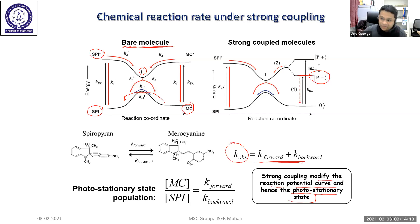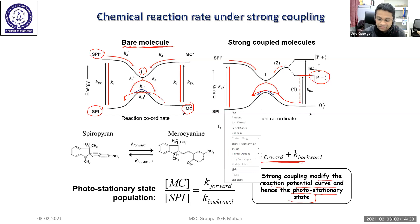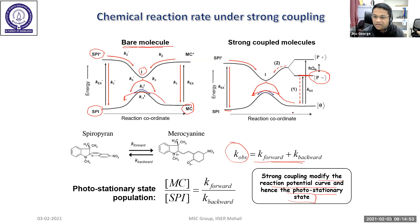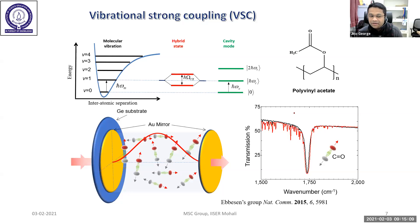One interesting aspect of this 2012 paper is the thermal return pathway — merocyanine can revert to spiropyran. Under strong coupling, the ground state energy is pushed slightly down, which could also influence the chemical reaction. However, due to poor signal-to-noise, this was difficult to detect properly. This triggered further discussion in our group about whether vacuum field coupling can control ground-state reactions, and that is where the idea of vibrational strong coupling (VSC) came into our minds.